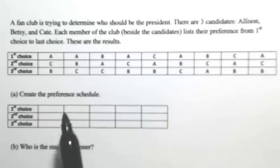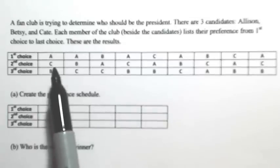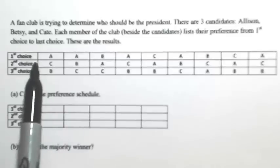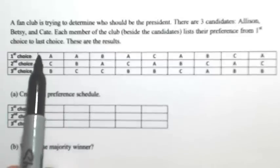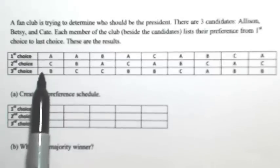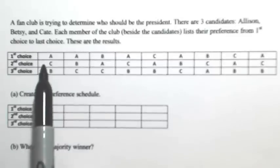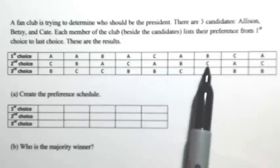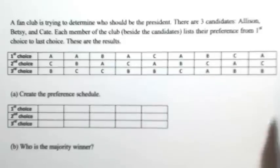Within the results, this is saying that this voter prefers Allison over Kate over Betsy. So we have 9 voters total.